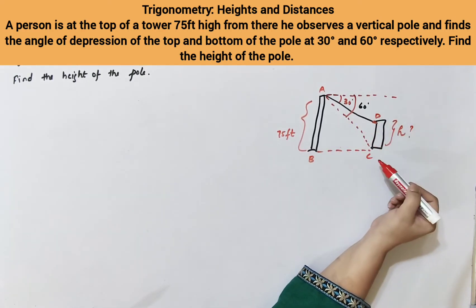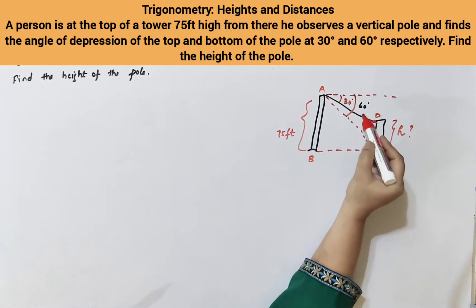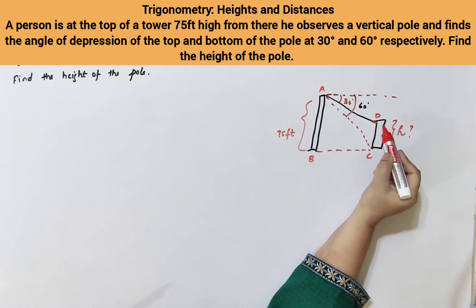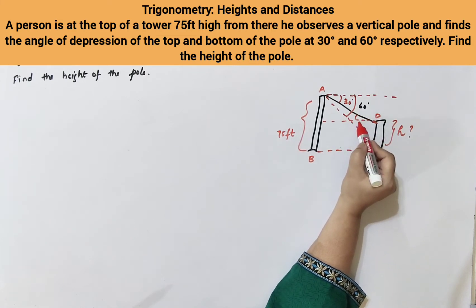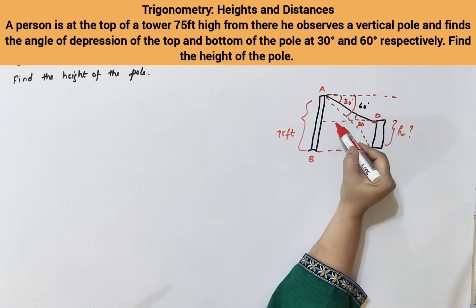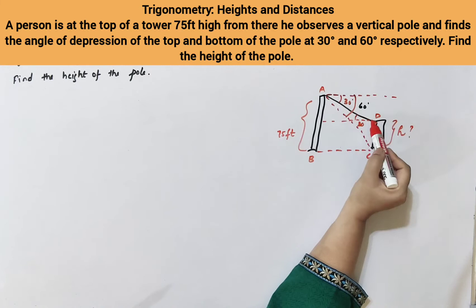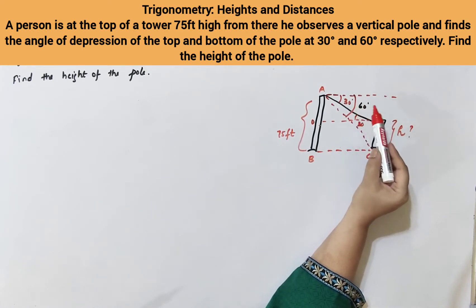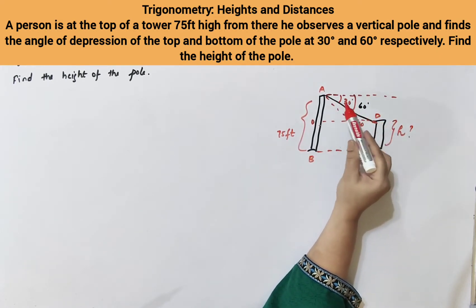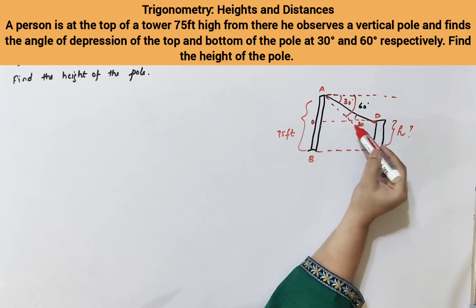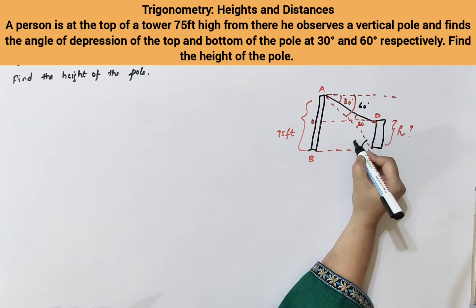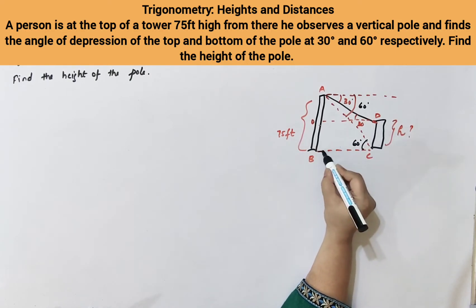We'll use the alternate angle principle. The first angle of depression is 30 degrees along line AD, so the alternate angle is also 30 degrees. I'm drawing the line here because it has to form a triangle. Similarly, the next angle of depression is 60 degrees along line AC, and its alternate angle is also 60 degrees. So now this forms a triangle.